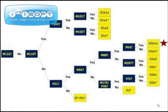Lack of PK4 places you in paragroup O2A1 star. If instead of PK4 you have M297, you are in O2A2. A negative result for M297 places you within the O2A star lineage.